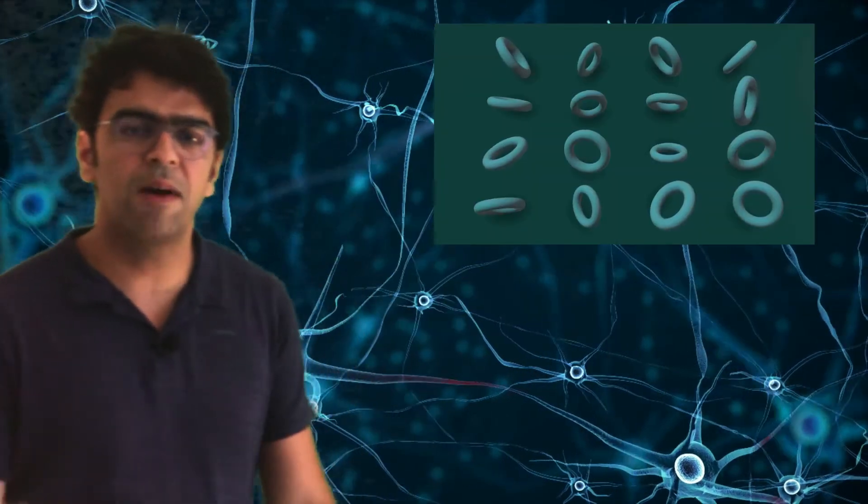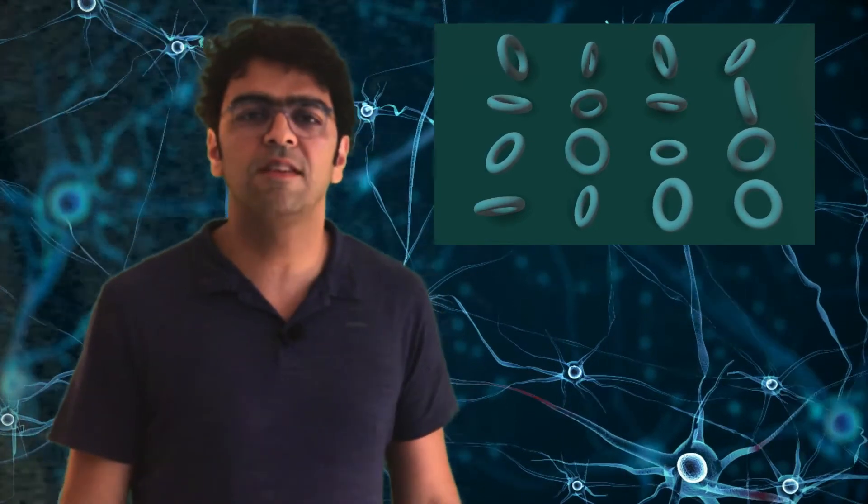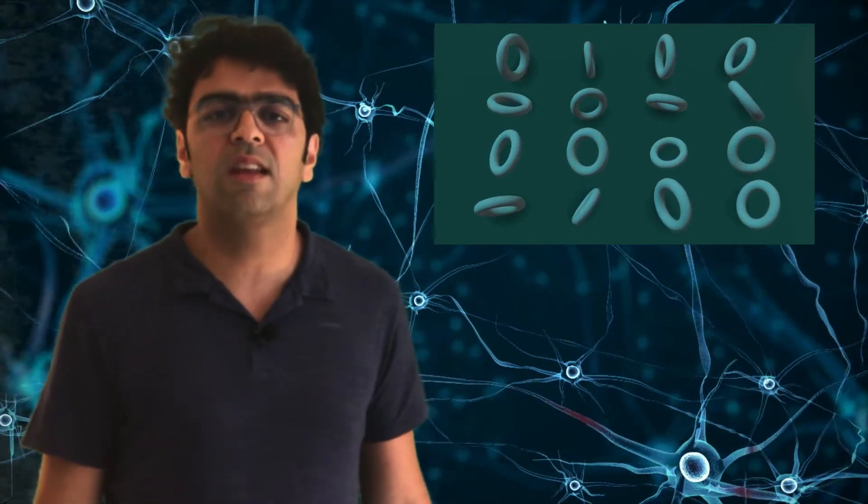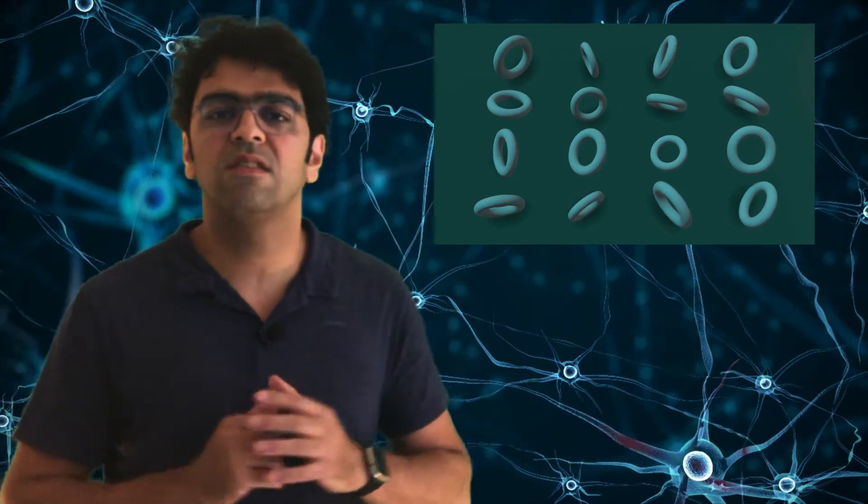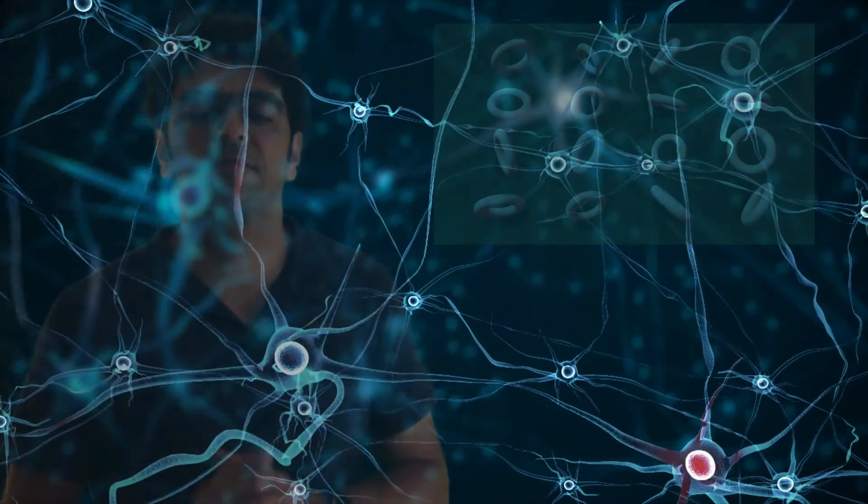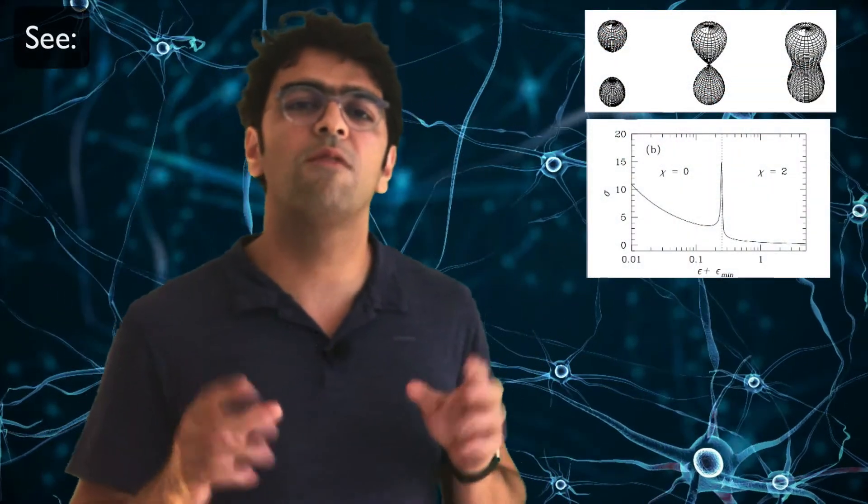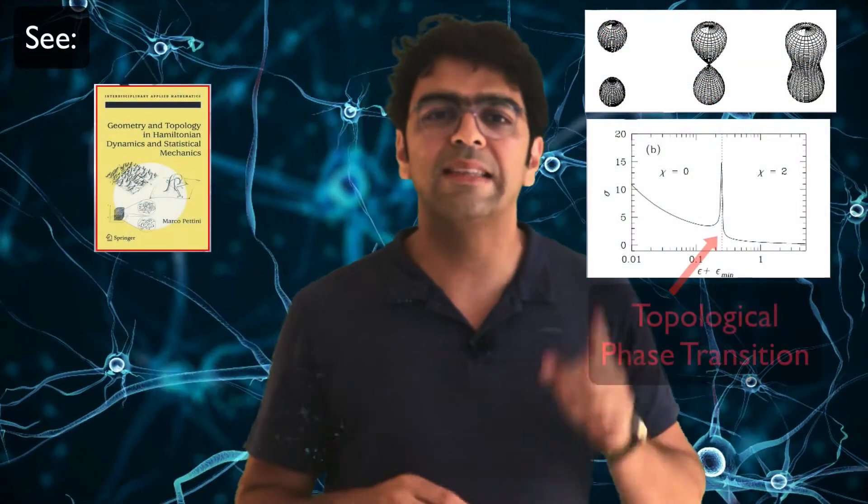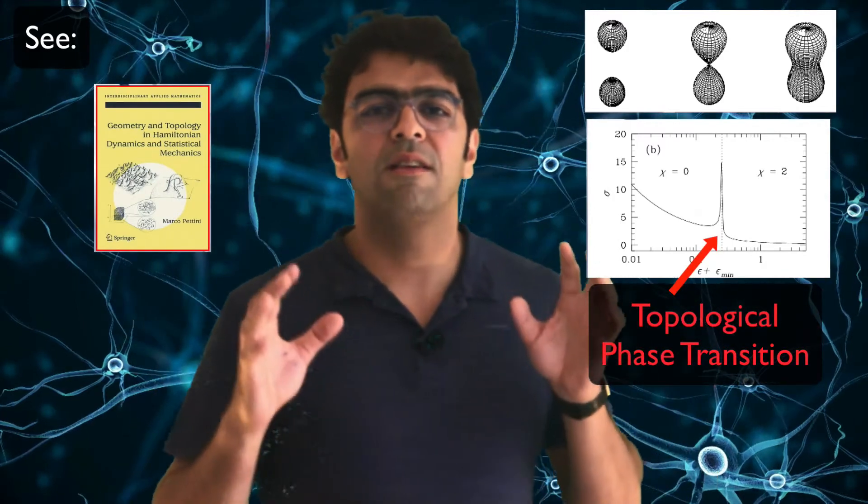Over the past 20 years, theoretical physicists tried to understand phase transitions under a topological perspective. In particular, it was conjectured that a topological change in the configuration space of a Hamiltonian system is associated with a phase transition.